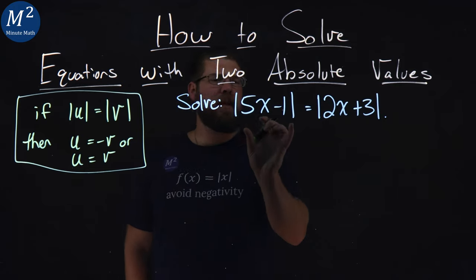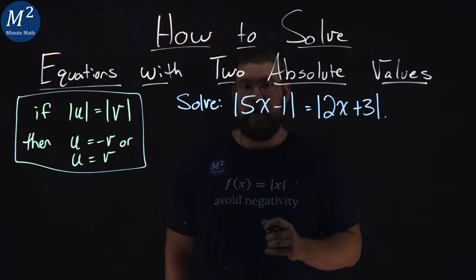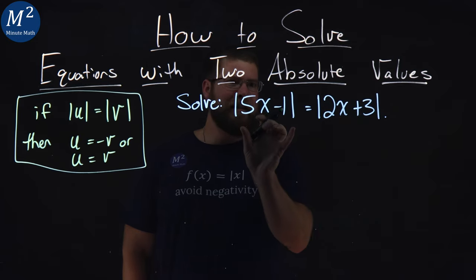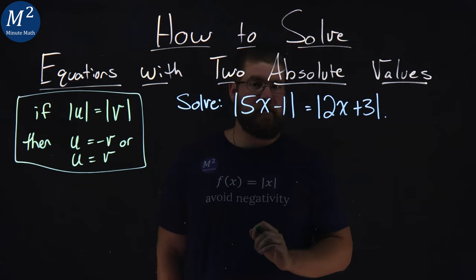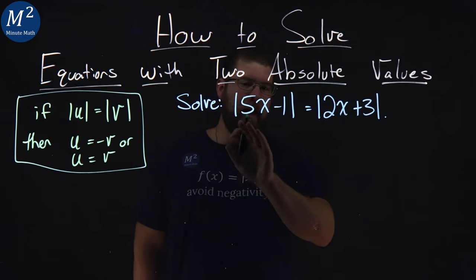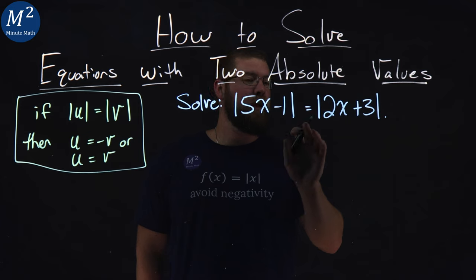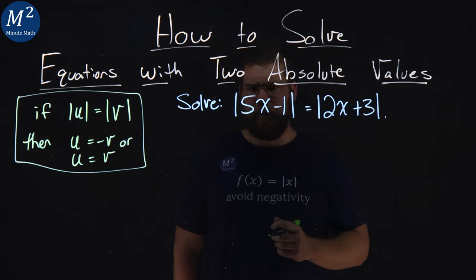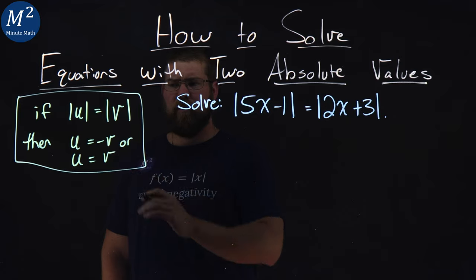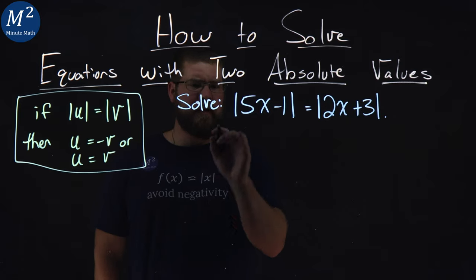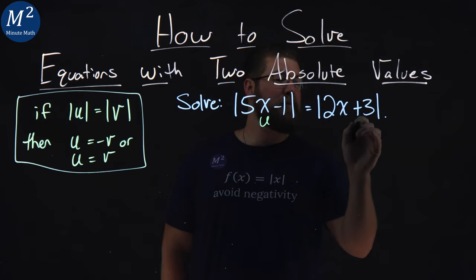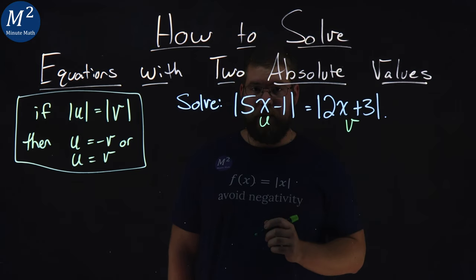So how do we apply it right here with this equation? We have an absolute value on both sides, and that's all we have on each side. The absolute value of 5x minus 1 is equal to the absolute value of 2x plus 3. We apply our rule: 5x minus 1 is like our u, and 2x plus 3 is our v.